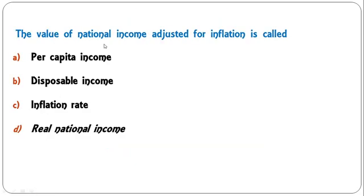What are the various components of final expenditure? Private final consumption expenditure, government final consumption expenditure, gross domestic capital formation, net exports, or all of the above? All of the above is the correct answer — these four are the components of final expenditure.